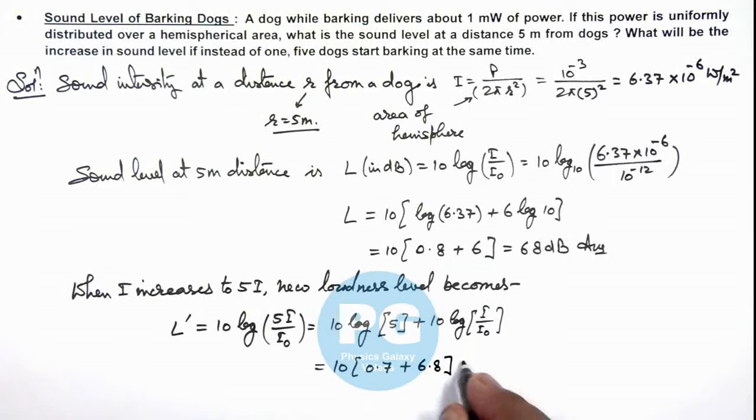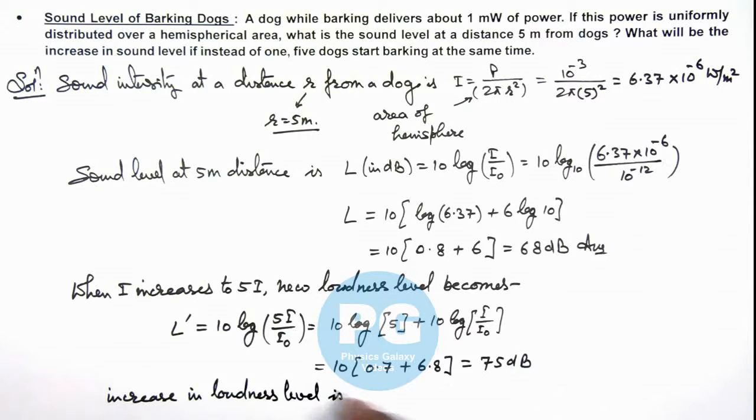On simplifying, this is giving us 75 dB, and we are required to find the increase in loudness level. So here we can write increase in loudness level is ΔL which is L' minus L, that is 75 minus 68 which equals 7 dB. That is the result of this problem.